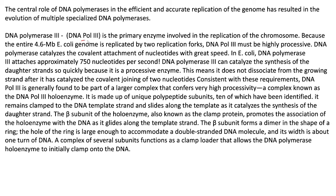We also call it DNA Pol 3 — the abbreviation for polymerase is Pol. DNA Pol 3 is the primary enzyme involved in the replication of the chromosome. In the E. coli genome, there is a 4.6 Mb stretch of DNA that is replicated with the help of DNA Pol 3. Therefore, DNA Pol 3 must be highly processive. DNA polymerases catalyze the covalent attachment of nucleotides with great speed and accurate sequence, meaning there is a low number of errors in the new daughter strand.